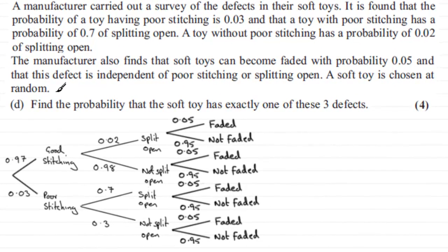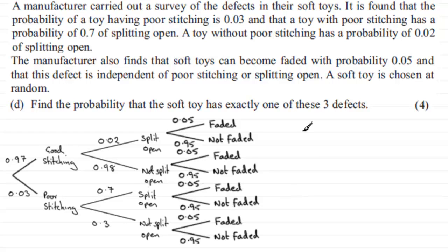For the last part of this question we've got to find the probability that the soft toy has exactly one of these three defects. If you haven't tried this already, just pause the video and come back when ready. We'll run through the solution. We've got the tree diagram here, and if we're looking for exactly one of the three defects, there are several possibilities.